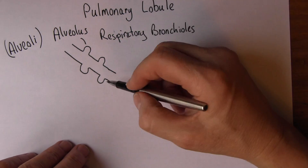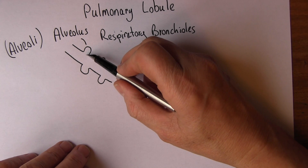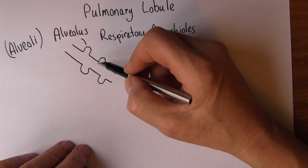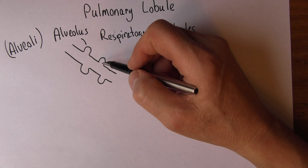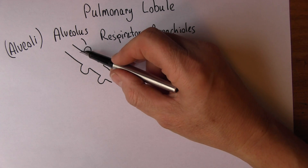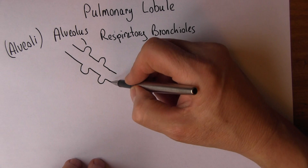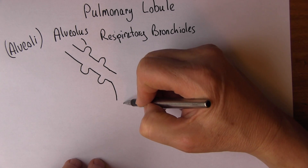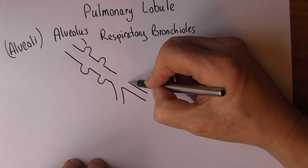The respiratory bronchioles are the first place where the surface area is increased by these alveolar air sacs, and also the first place, as we go down into the bronchial tree, where the walls are thin enough to allow gaseous exchange to take place. The respiratory bronchioles carry on breaking down a little bit more into very small respiratory bronchioles.